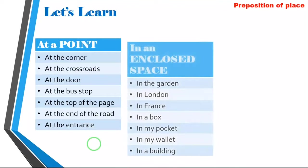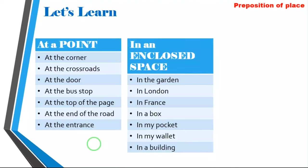Now let's move to 'in' — an enclosed space. In the garden, in London, in France, in a box, in my pocket, in my wallet, in a building. Please read it. In the garden, in London, in France, in a box, in my pocket, in my wallet, in a building. Very good.